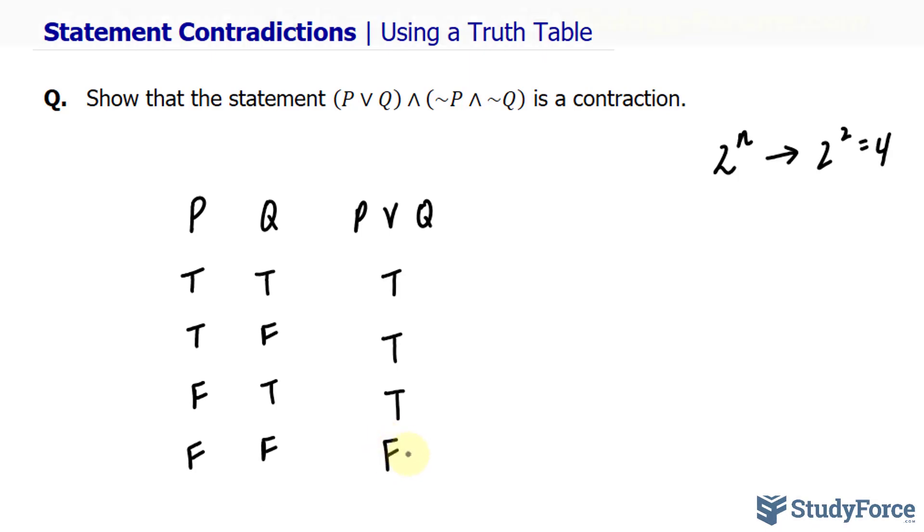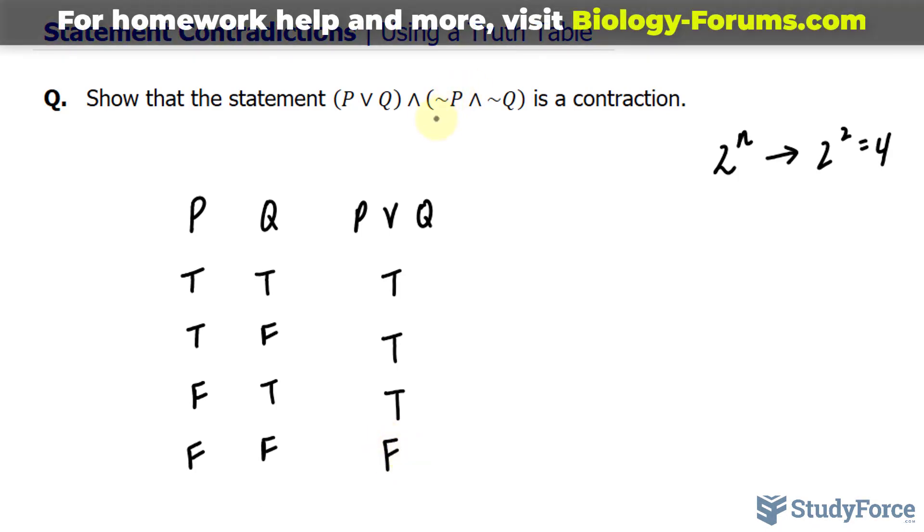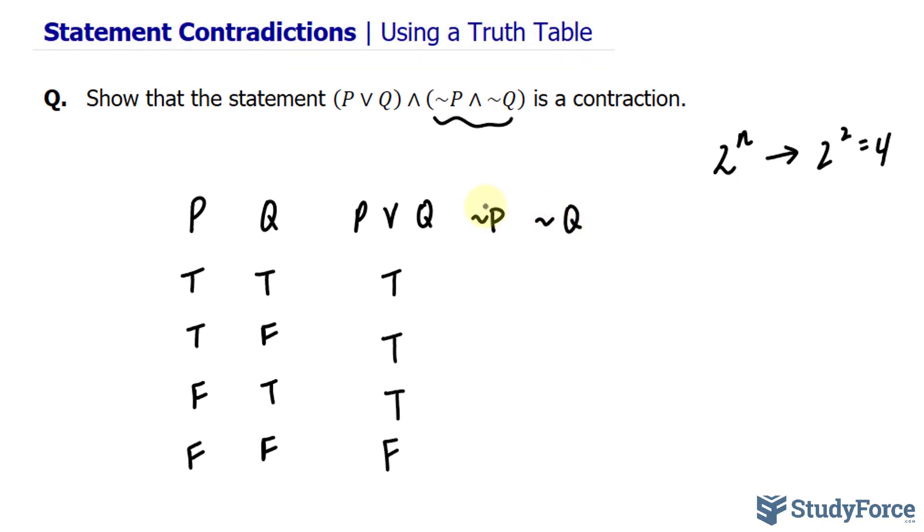Now we will look at this set of parentheses, and inside there, we have not p and not q. So we'll look at those individually before we look at them as a whole. For not p, all you have to do is take the opposite of these. So if this is true, then that's false, false, that's false, and that's false, so these will be true.